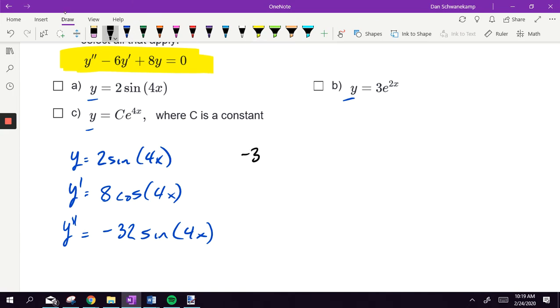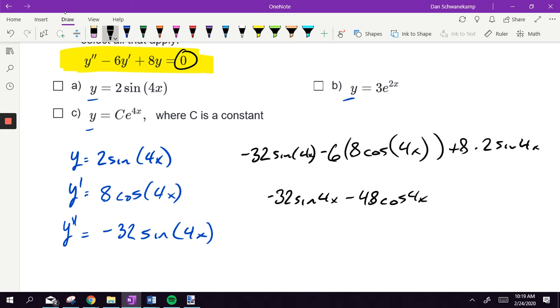So it says y double prime, so negative 32 sine of 4x minus 6 times 8 cosine 4x plus 8 times y, 2 sine 4x. You just try to simplify it down and see if we get zero in the end. Negative 32 sine 4x minus 48 cosine 4x, is anything going to cancel out this minus 48 cosine 4x? Then it's not zero. Plus 16 sine 4x, that in no way is equal to zero when we simplify it down. So it is not the first one, that first equation did not work.